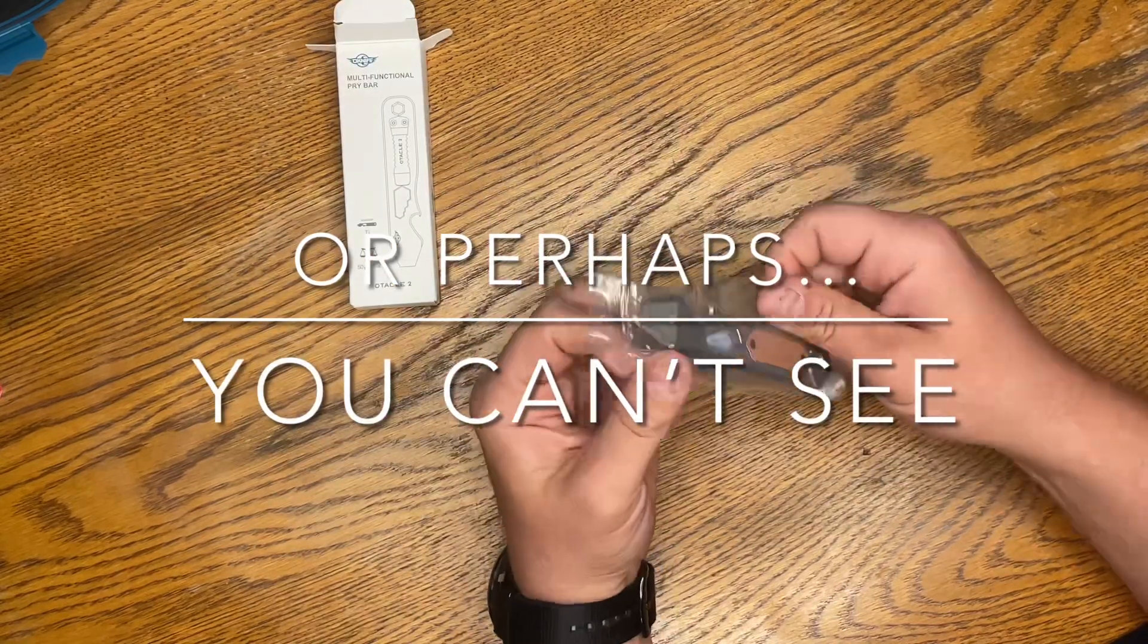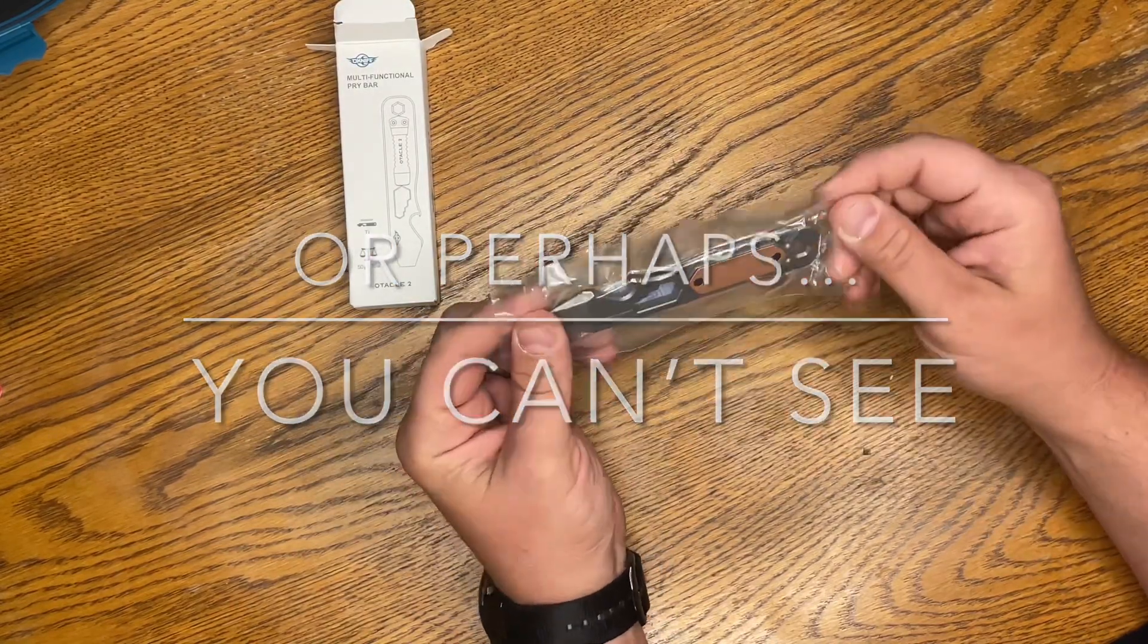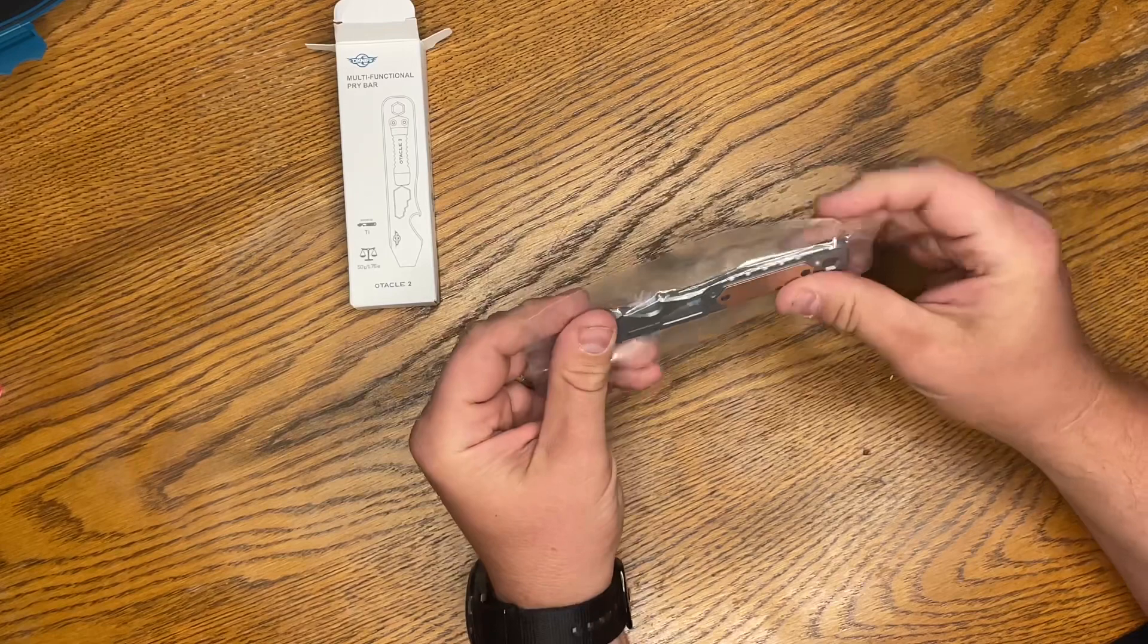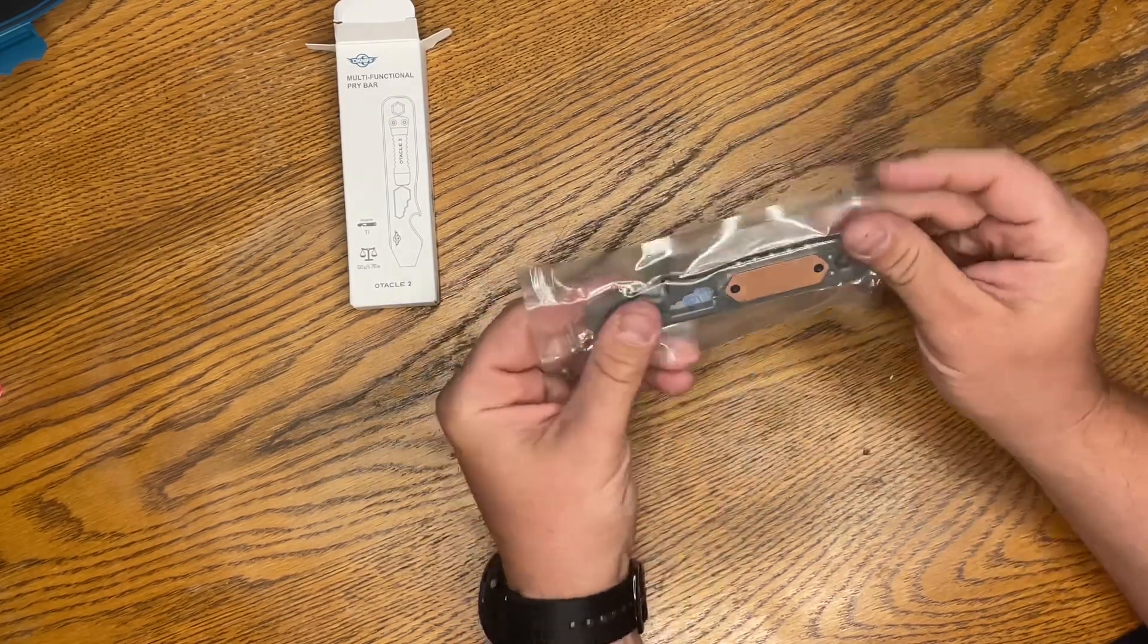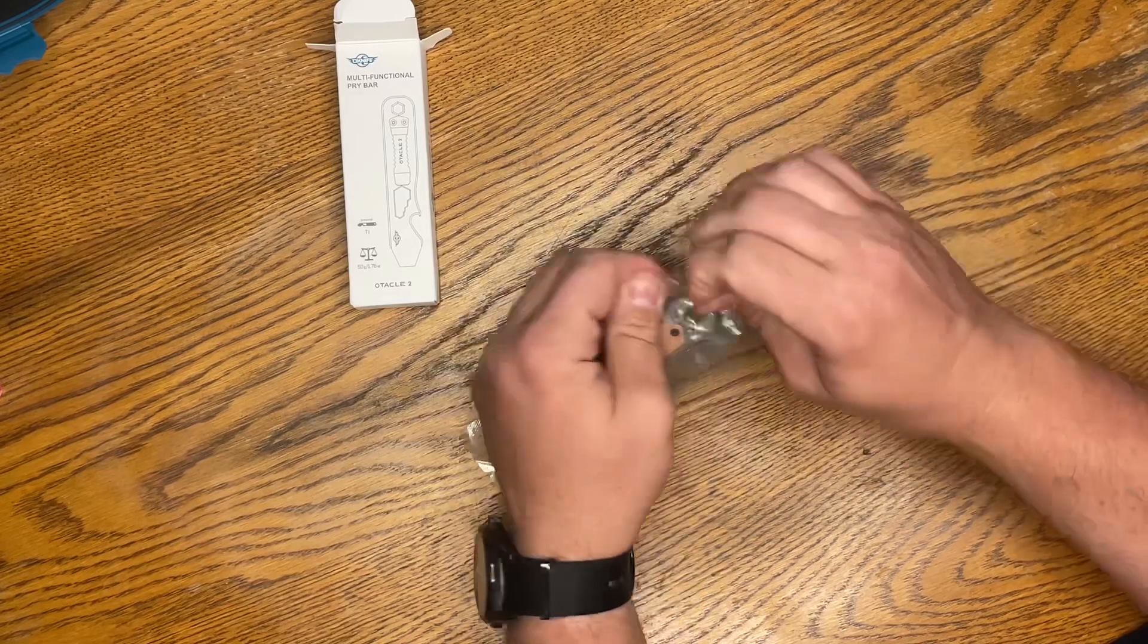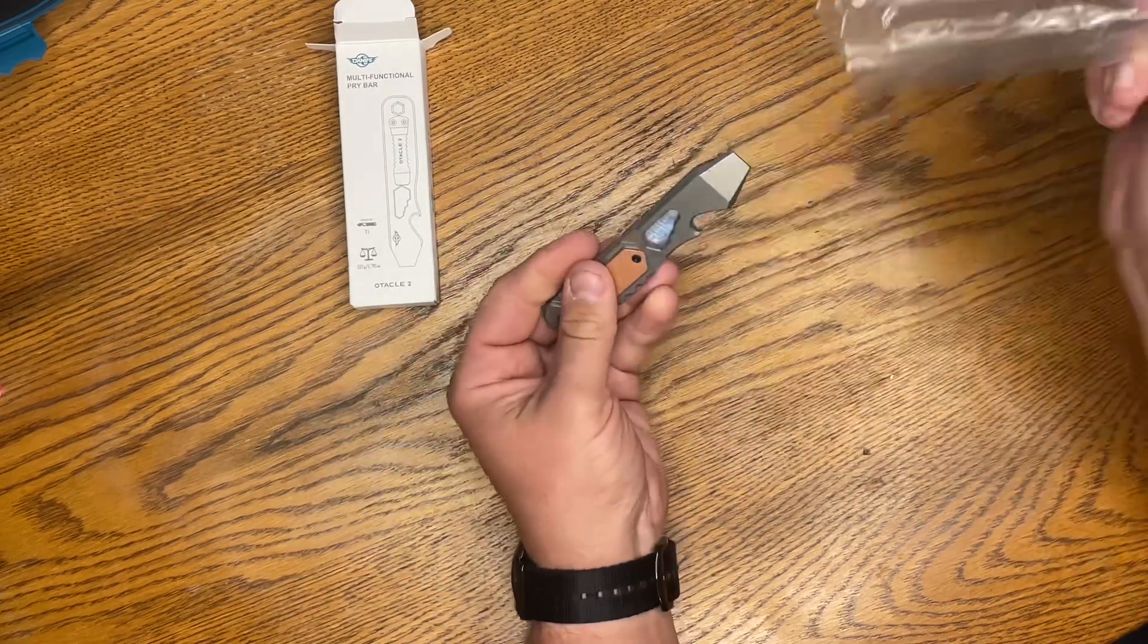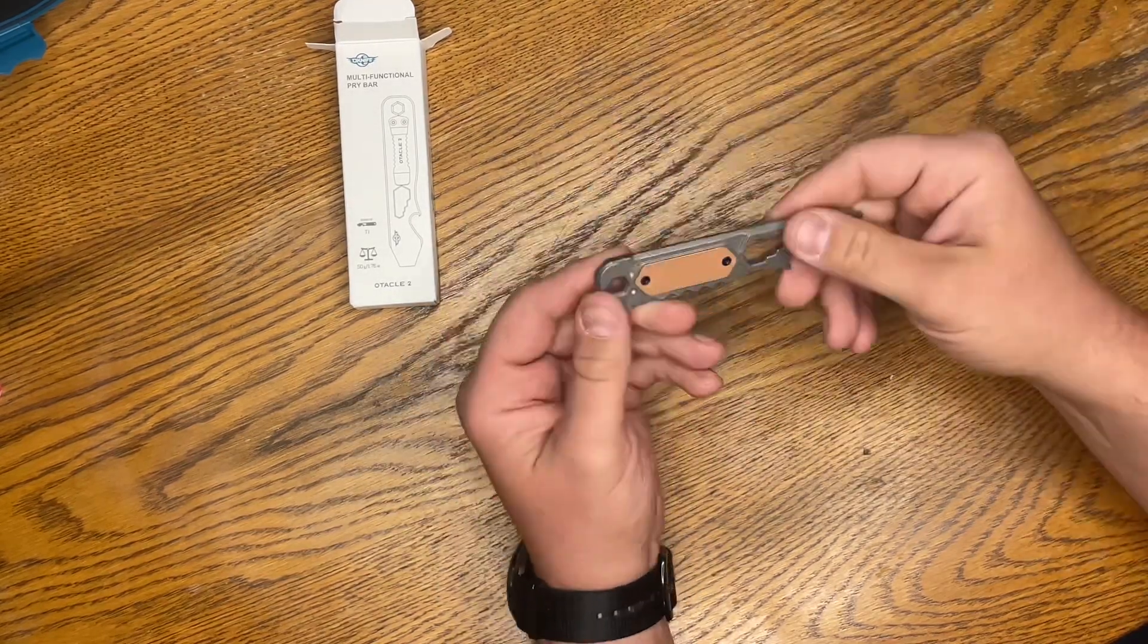It comes with a lanyard, as you can see. That's about all that's in the box, and the little multi-tool here which is in this nice wrapper with a moisture absorber because of this copper inlay right here. It has a nice little easy tear pouch. Get all that garbage out the way and here we are.